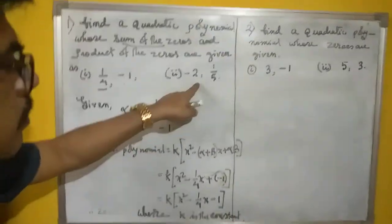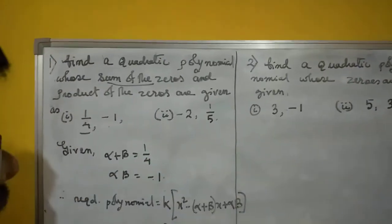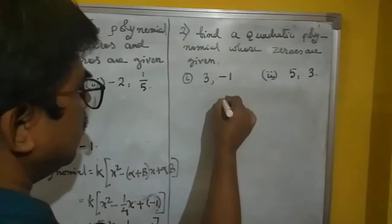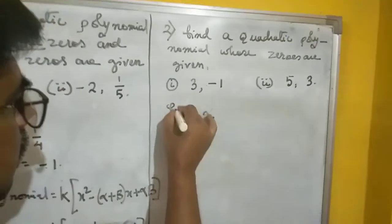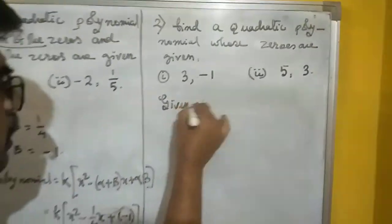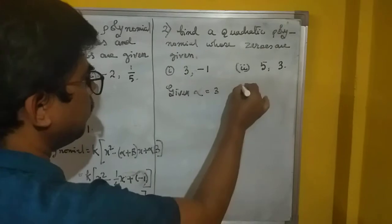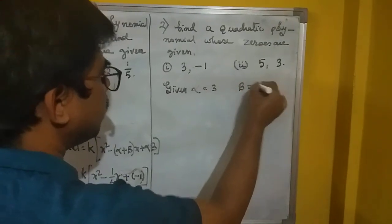So you can do the second one also. Now next one, zeros are given. Here alpha is given, next question, alpha is given 3 and the beta is given as minus 1.